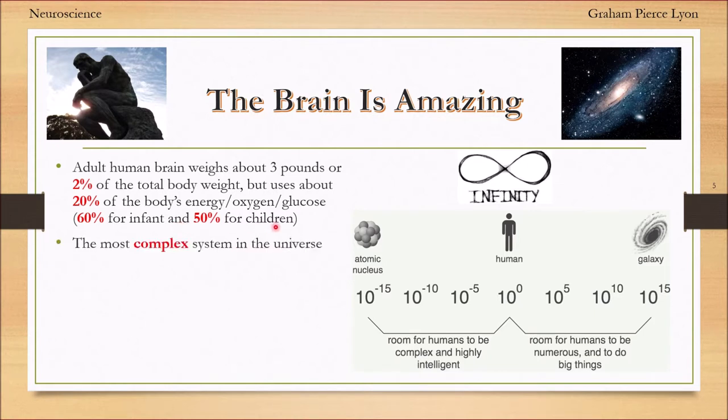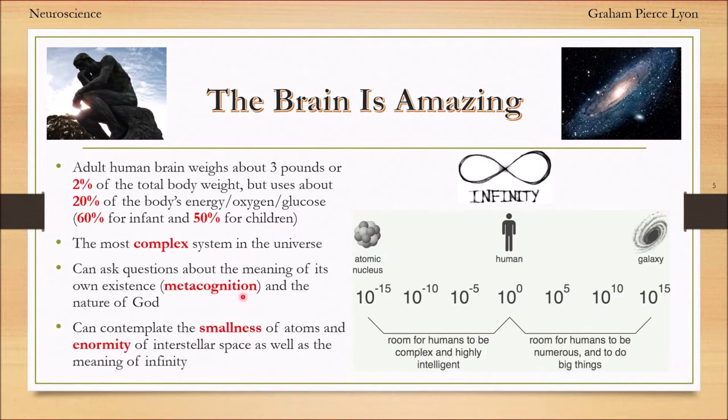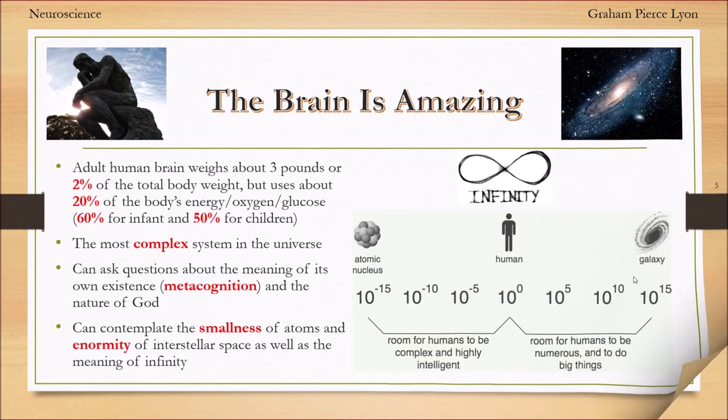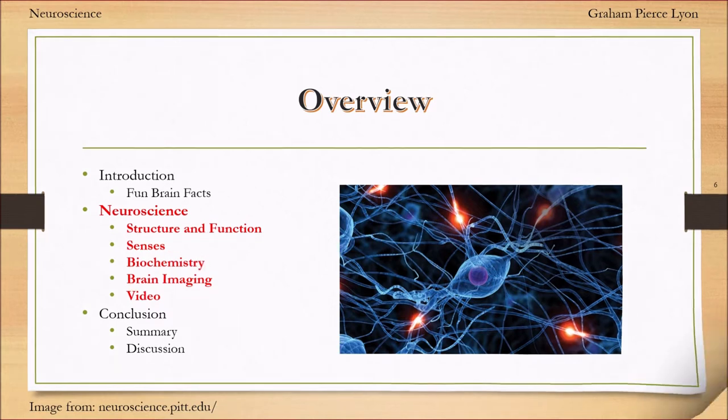The brain is amazing. It's only three pounds, 2% of your body weight, but it uses 20% of your body's energy and even more for an infant or children - 60% for an infant. It's the most complicated system that we know of in the entire universe. You can ask questions about the meaning of your own existence and contemplate the smallness of atoms and the enormity of the entire universe.